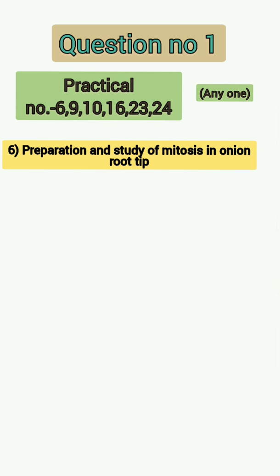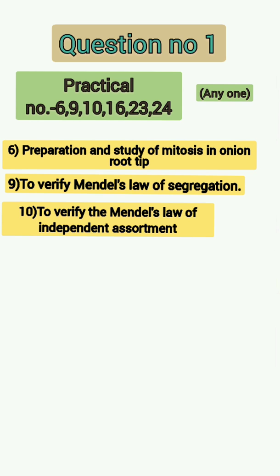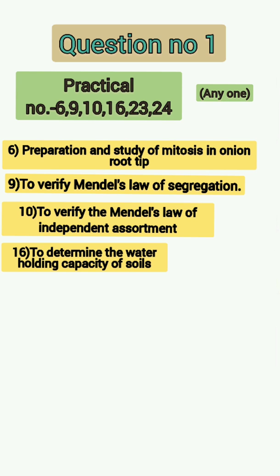Practical 6 is preparation and study of mitosis in onion root tip. Practical 9 is to verify Mendel's law of segregation — different color beads will be given, you have to drop them on a Punnett square, do the cross between them, and show it to the examiner. Generally this practical is performed in pairs. Practical 10 is to verify Mendel's law of independent assortment — four different color beads will be given, you draw a Punnett square, do the cross, and show it to the examiner. Practical 16 is to determine the water holding capacity of soil, which you perform and show to the examiner.